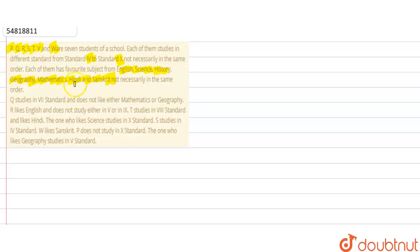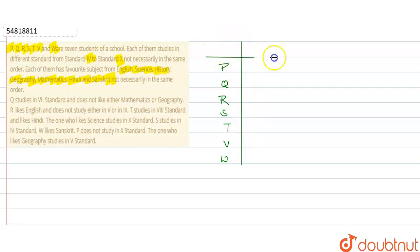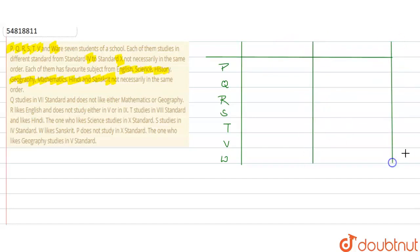Basically, there are 7 students who study in school. First of all, we will make a column for students: P, Q, R, S, T, V and W. Then we will create two more columns — one for standard and one for favorite subject.